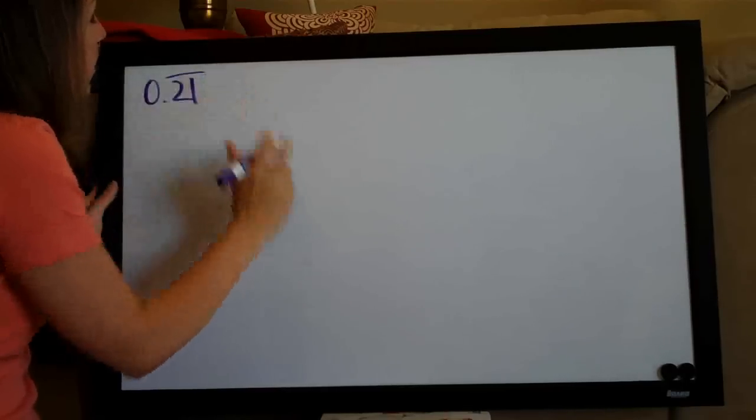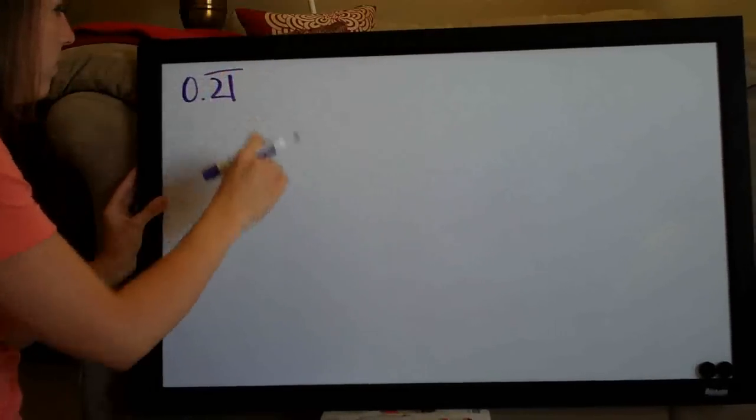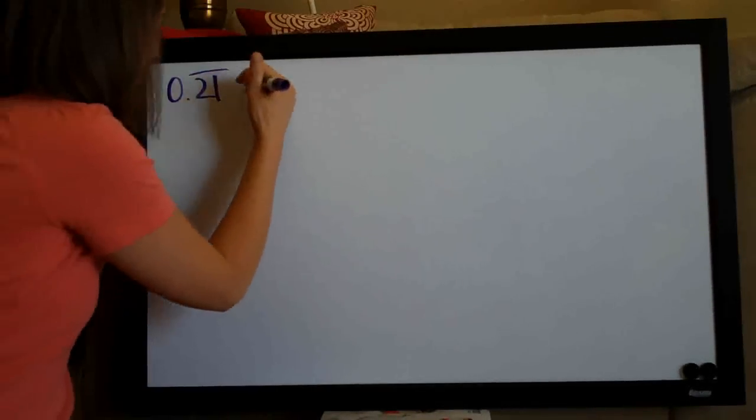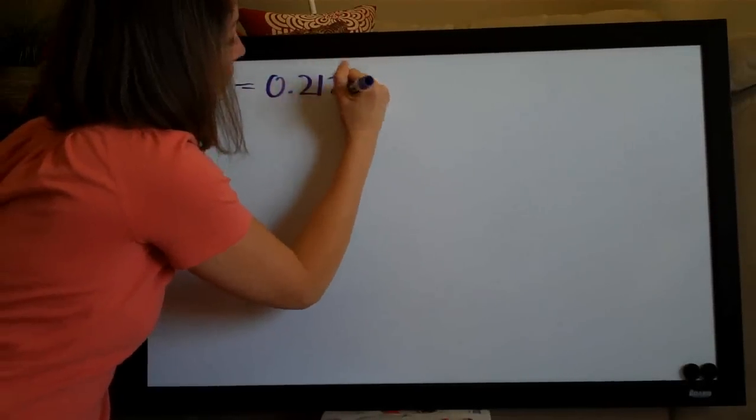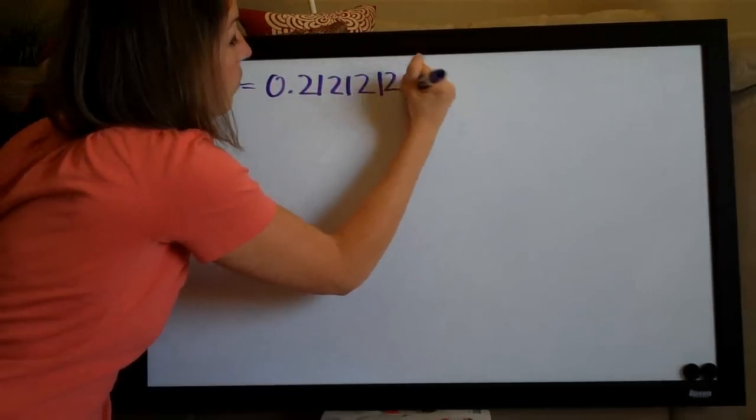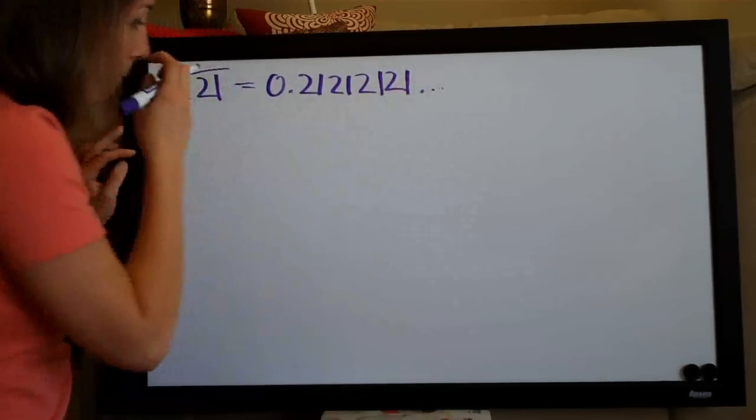Hi everyone. Welcome back to integralcalc.com. We're going to be doing another infinite series problem today. This one is an infinite decimal — it's 0.21 repeating. That's what this line means, so that's the same thing as 0.212121... forever.